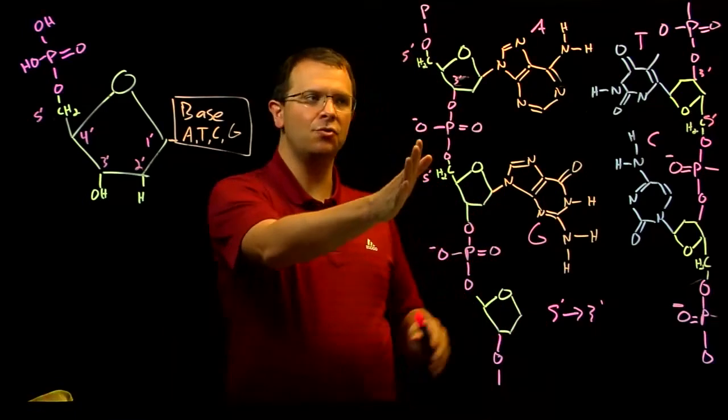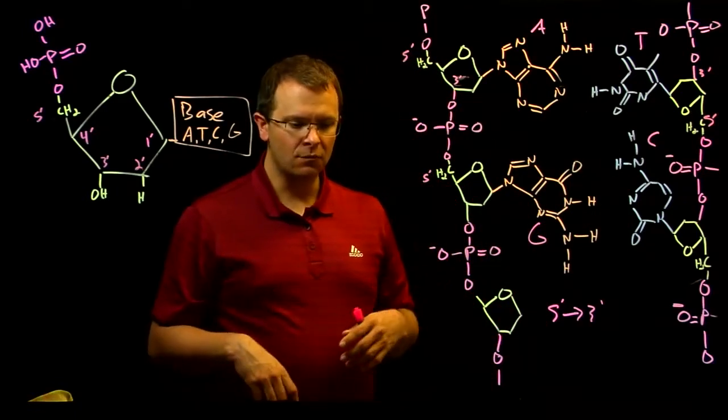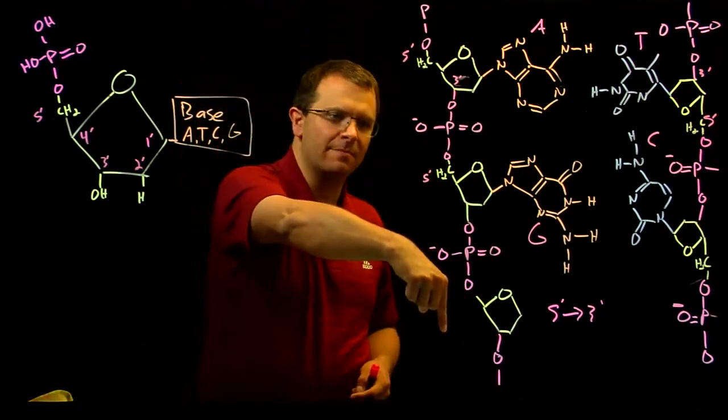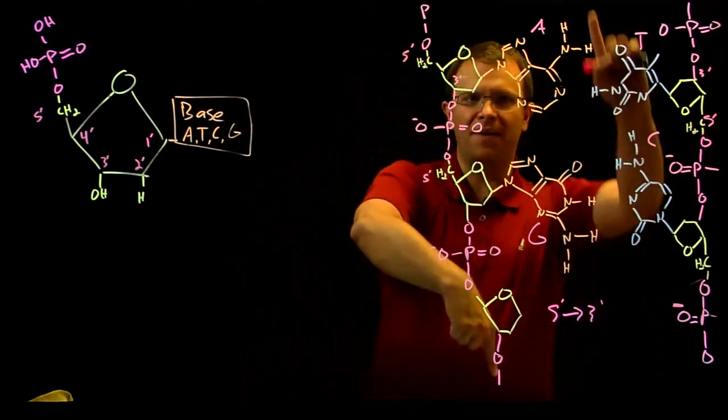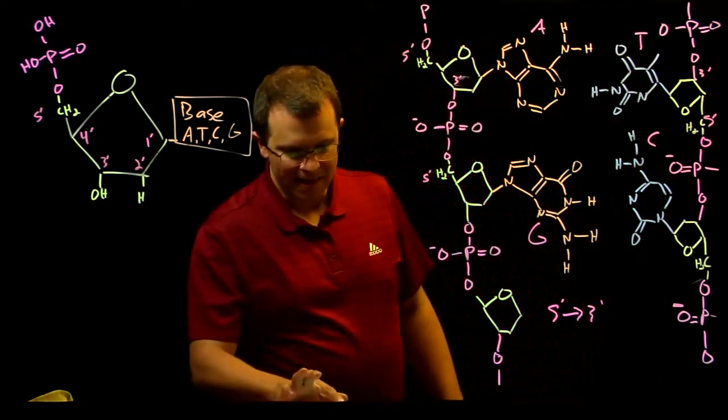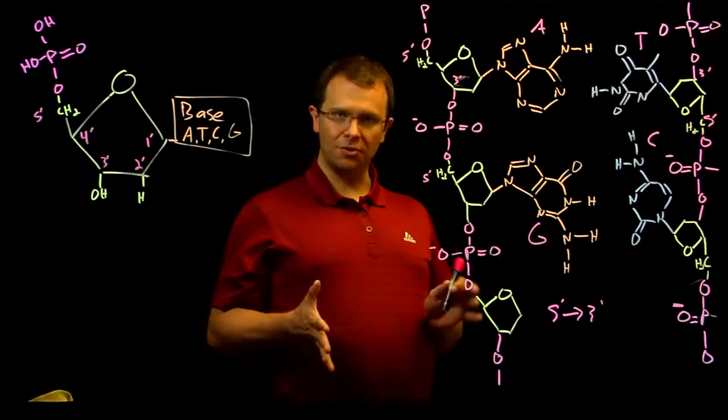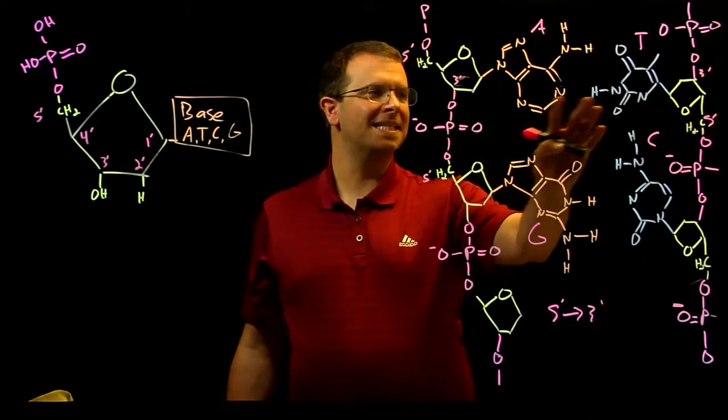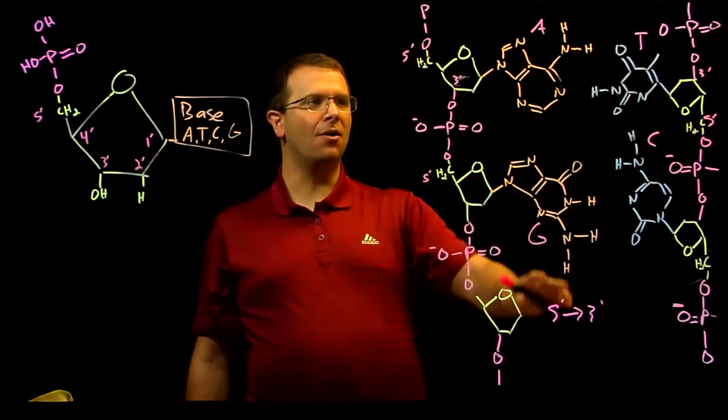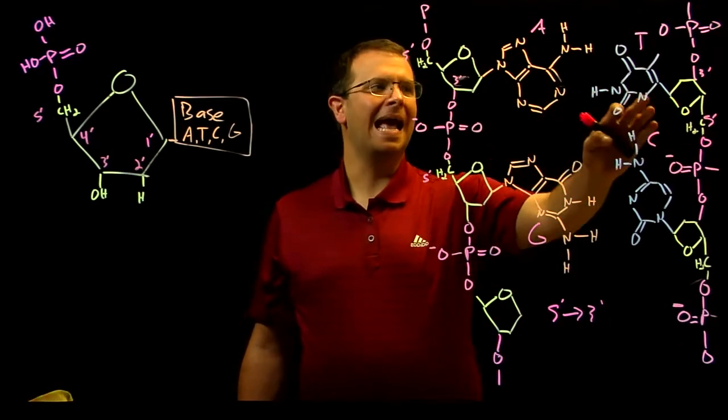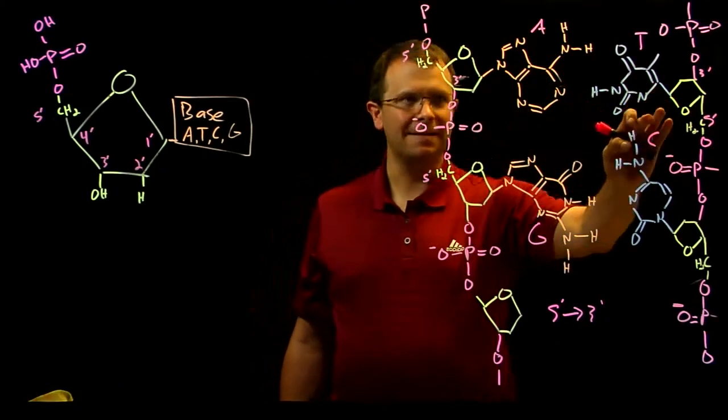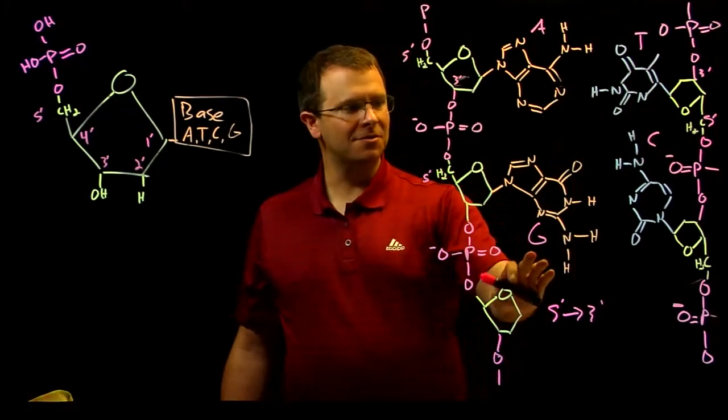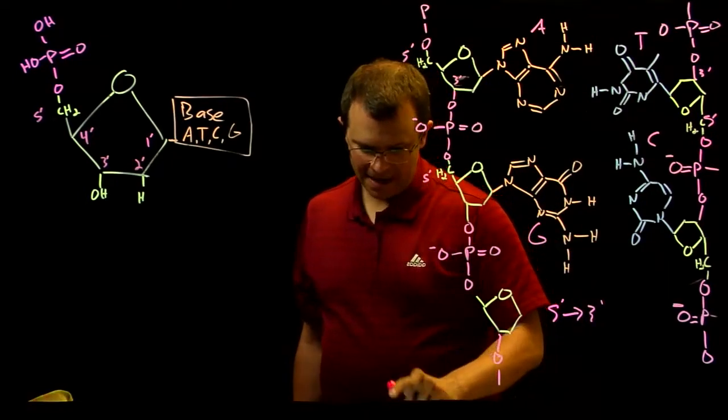We say that the two strands of DNA run anti-parallel to each other. So if one of them is 5' to 3' this way, the other one is 5' to 3' the other direction. Also note that the bases that pair up with each other, it's always two rings and one ring. It's always a purine and a pyrimidine. So A on one side and T on the other, G on one side and C on the other.